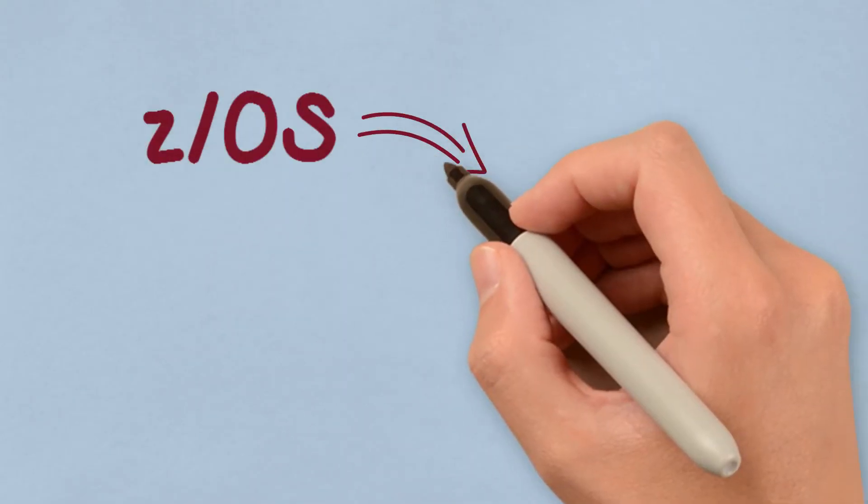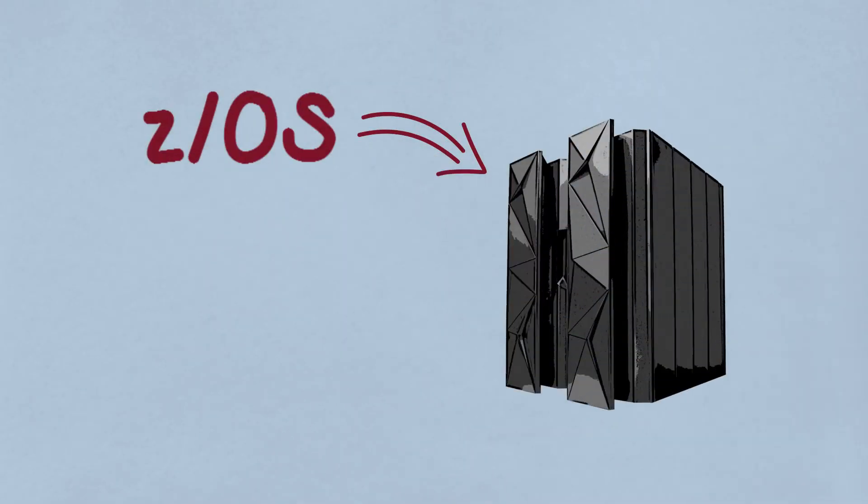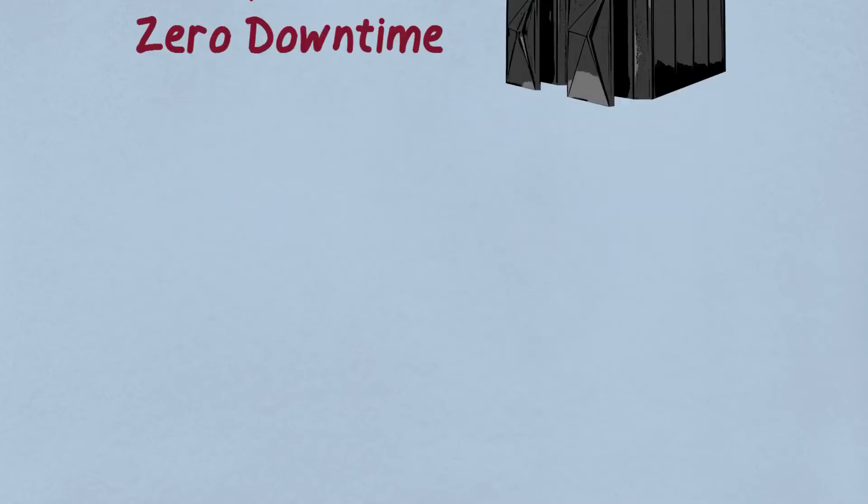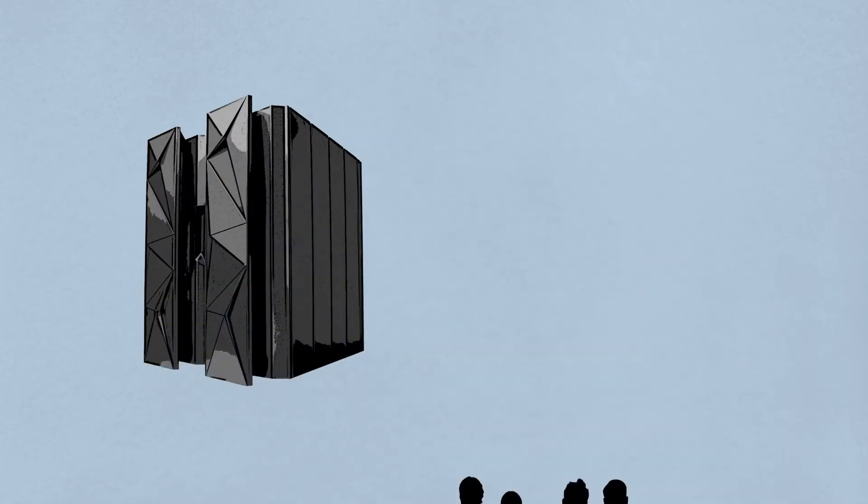Your ZOS mainframe is known for superior reliability. In fact, the Z in Z systems even stands for zero downtime. That means your users on Z have never experienced outages, right?